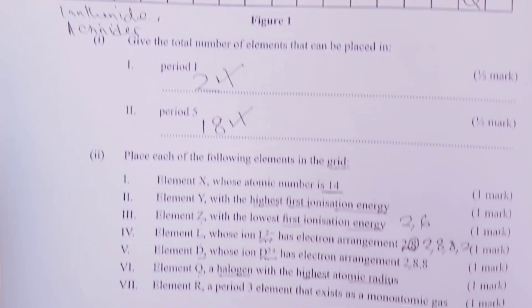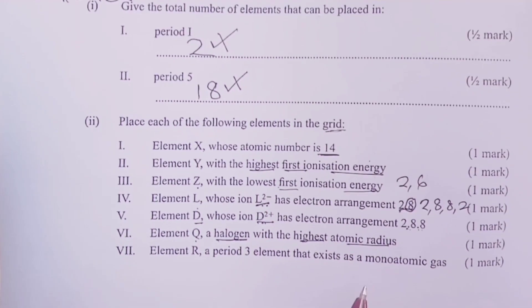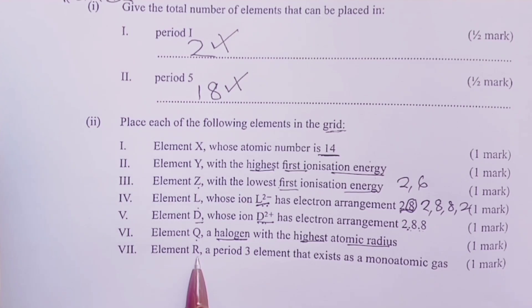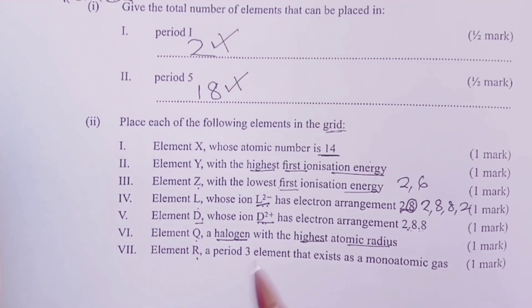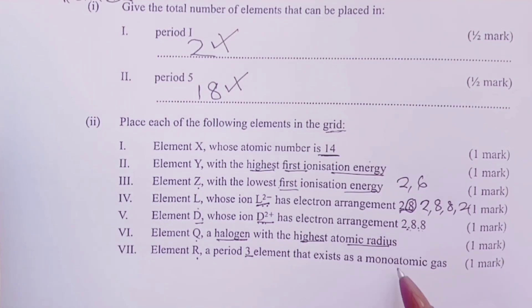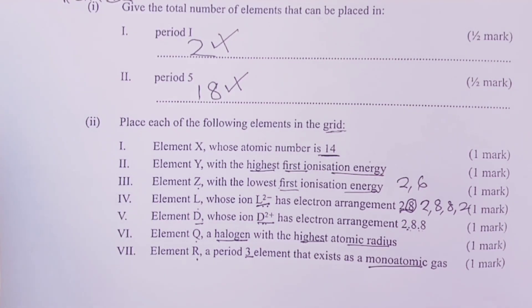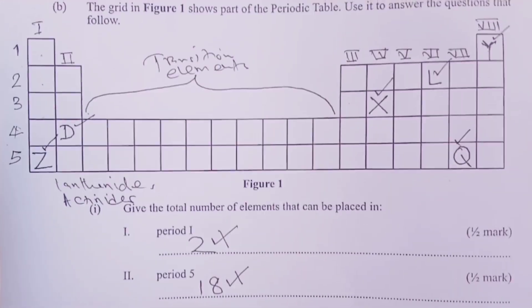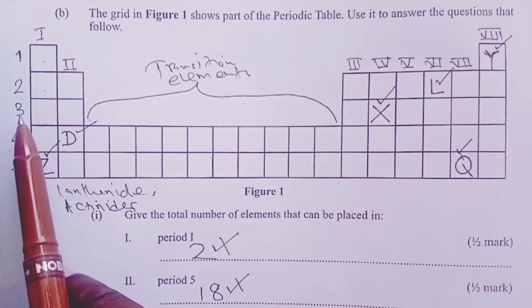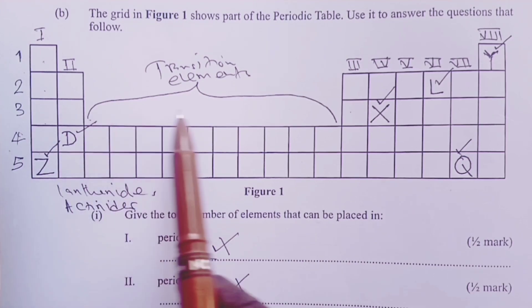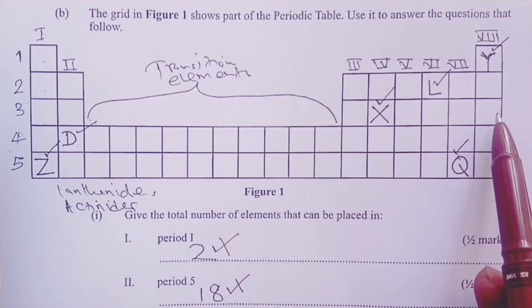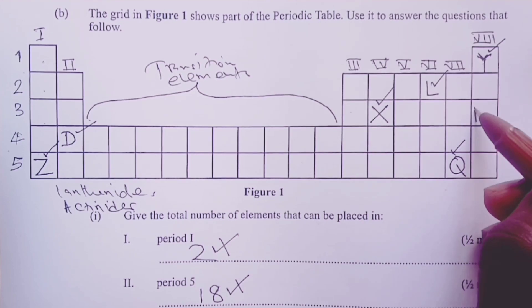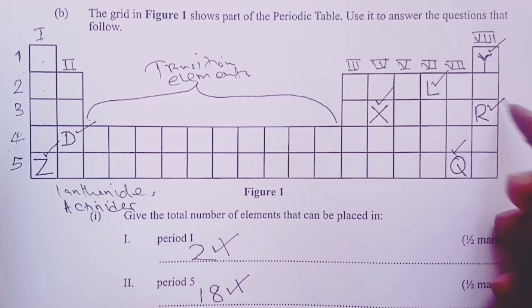Finally, question 1 asked us to place element R which belongs to period 3 and it exists as a monoatomic gas. Monoatomic gases are usually noble gases. So to place R, someone would move through period 3 all the way to group 8. That would be the position of R for the next mark.